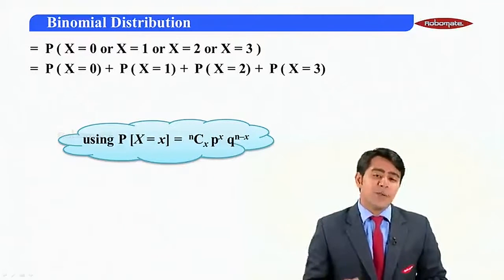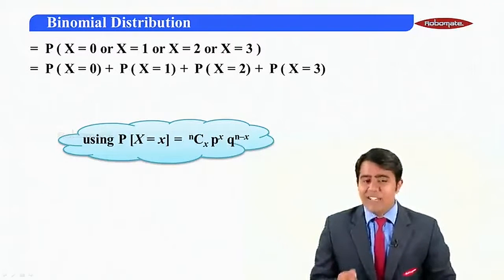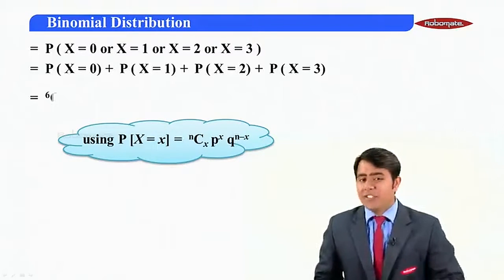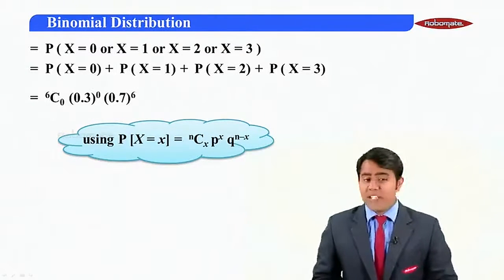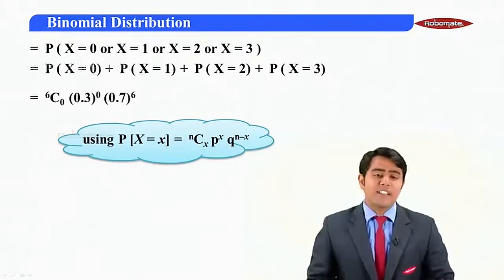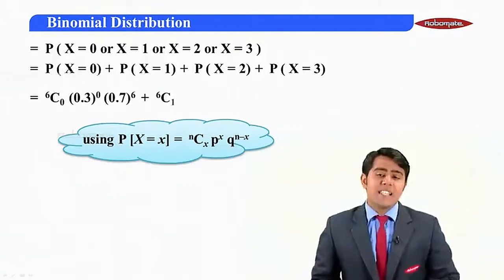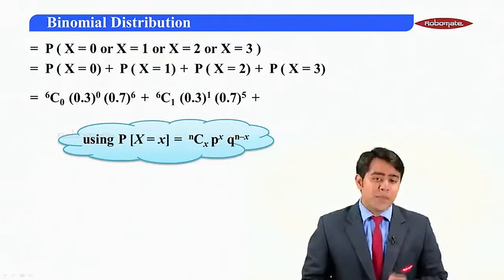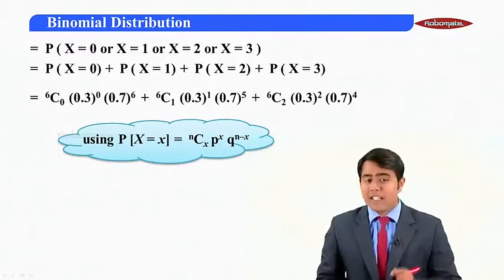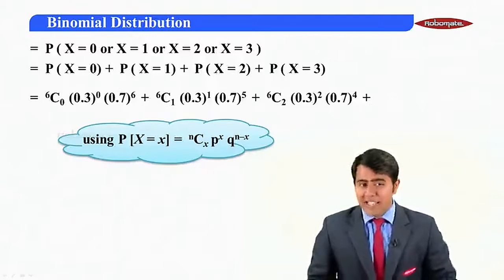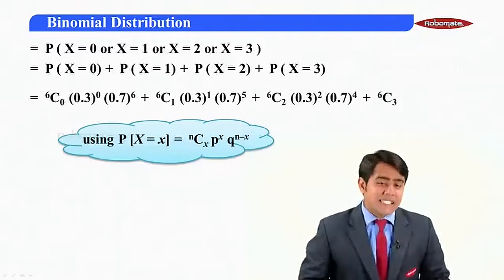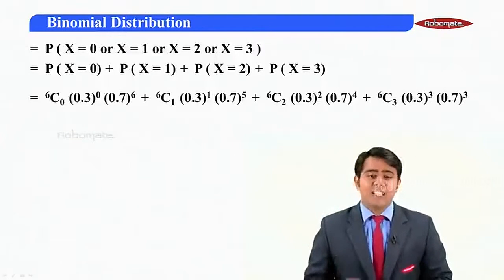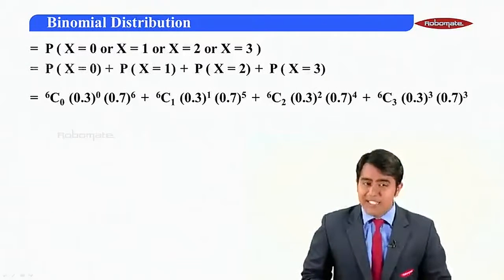Now, using the formula P(X=x) = nCx P^x Q^(n-x), substituting the values here, we get the terms as 6C0(0.3)^0(0.7)^6 + 6C1(0.3)^1(0.7)^5 + 6C2(0.3)^2(0.7)^4 + 6C3(0.3)^3(0.7)^3. So these are the values for the corresponding probabilities.